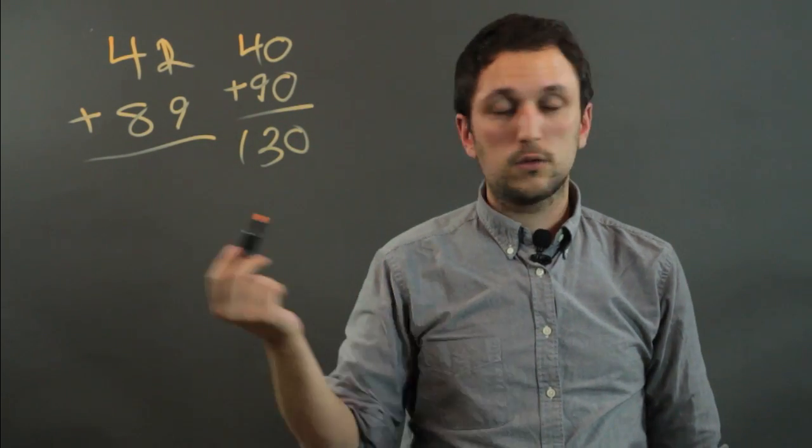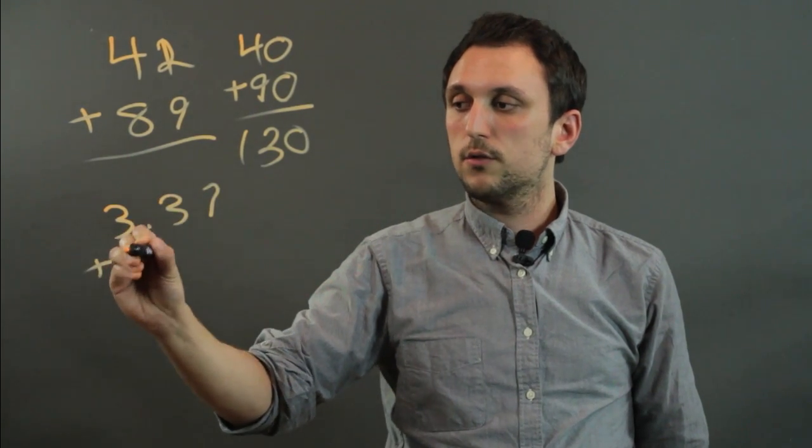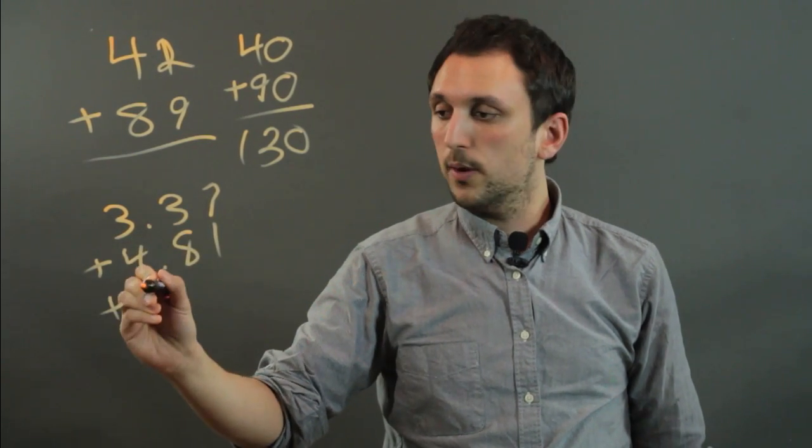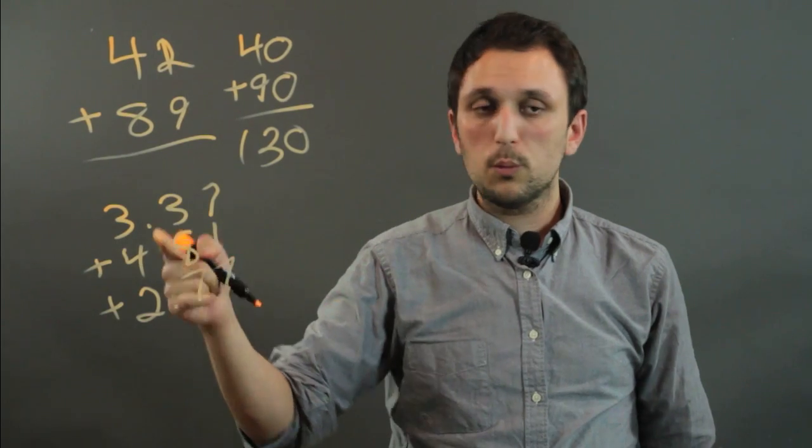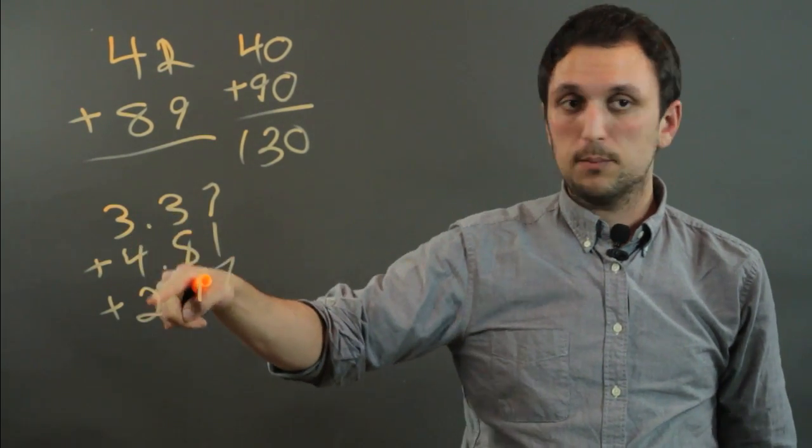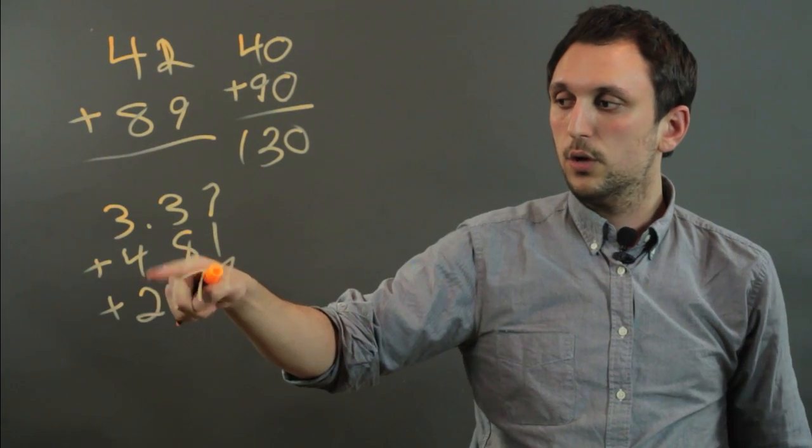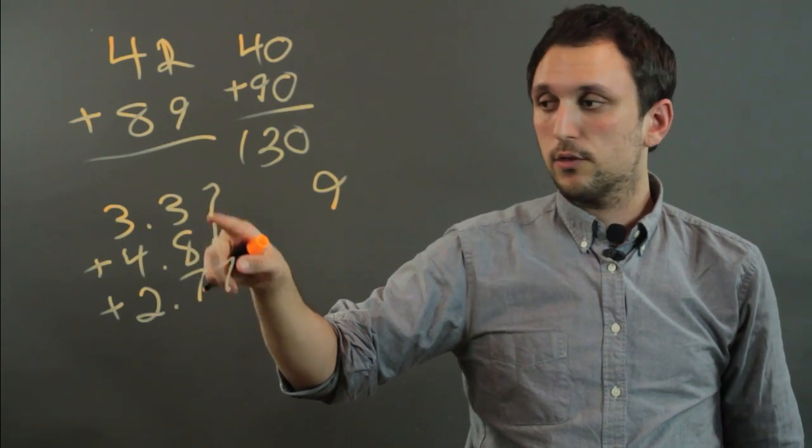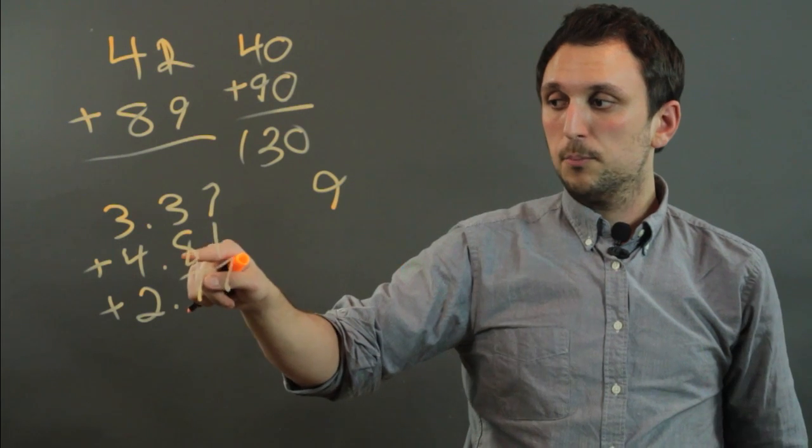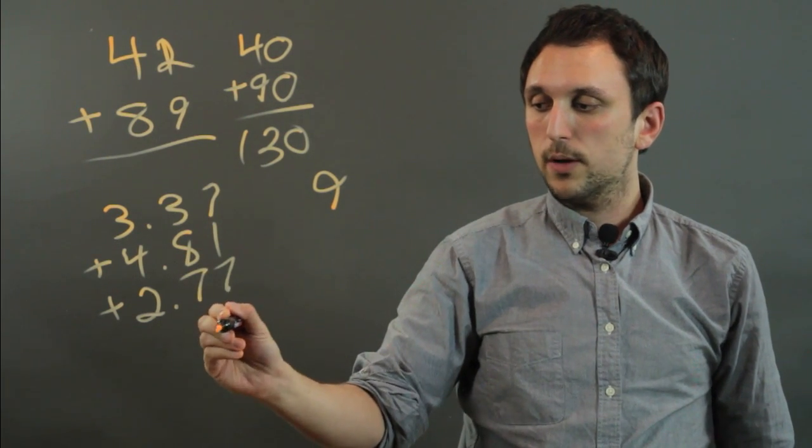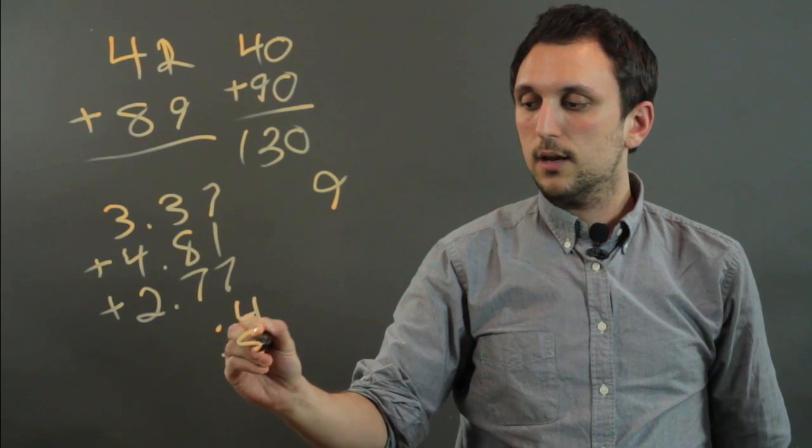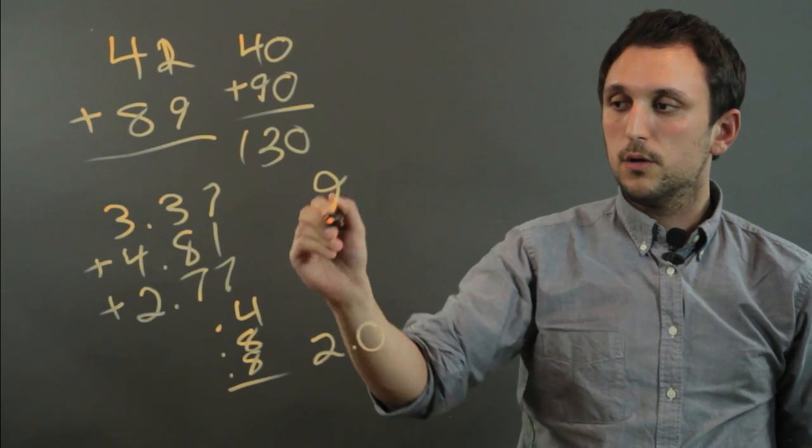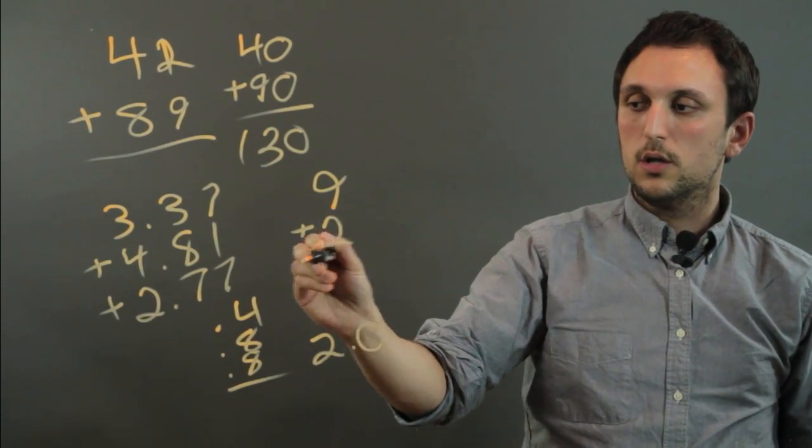Now if we have decimals we could say 3.37 plus 4.81 plus 2.77 and what we're going to do here is we're going to add these numbers up first so 3 plus 4 plus 2 is 9 and then we take the decimals and we round to the nearest tenth so we say 0.4, 0.8 and 0.8 so 0.4 plus 0.8 plus 0.8 is going to equal 2.0 so we say 9 plus 2 is 11.